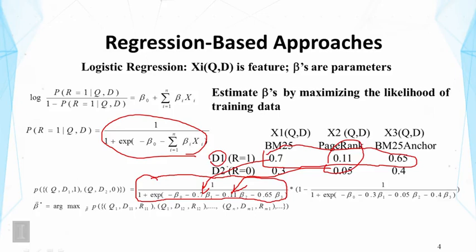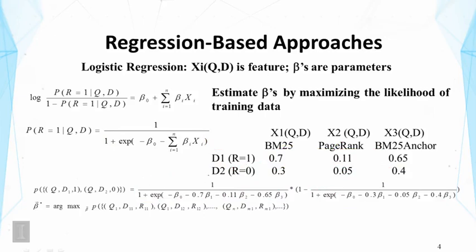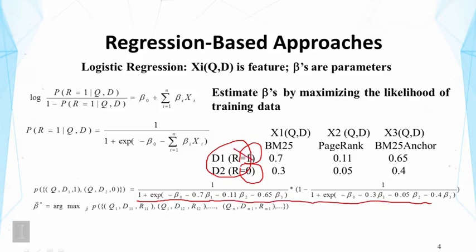We want to maximize this probability since D1 is a relevant document. For the second document D2, we want to compute the probability that the prediction is non-relevant, which means computing one minus this expression, since the expression gives the probability of relevance. So to get the probability of non-relevance, we just do one minus the probability of relevance. This whole expression is our probability of predicting a relevance of 1 for D1 and 0 for D2.